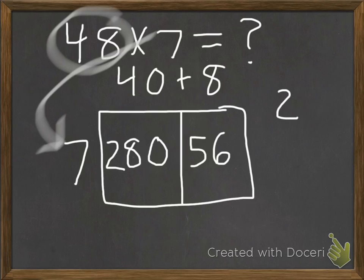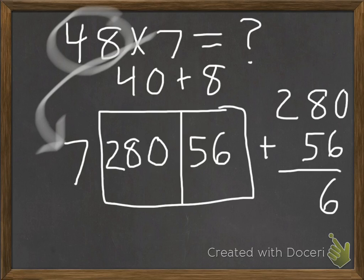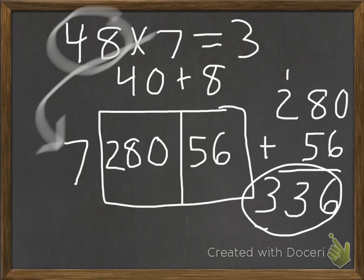Now all you simply do is take the numbers and line them up. We have 280, and then we're going to add 56 to that. When we do that, we get 336 for our answer. So the answer to 48 times 7 is 336. Try this out and follow along, and hopefully this is helpful.